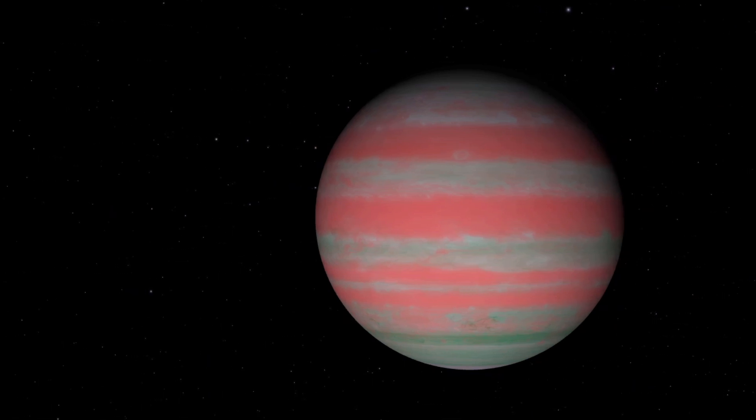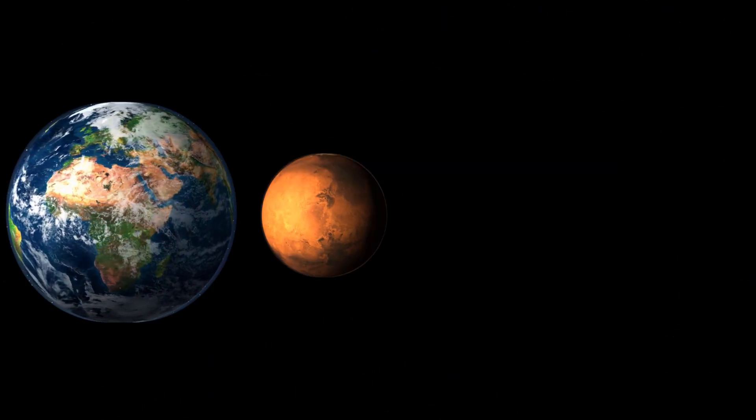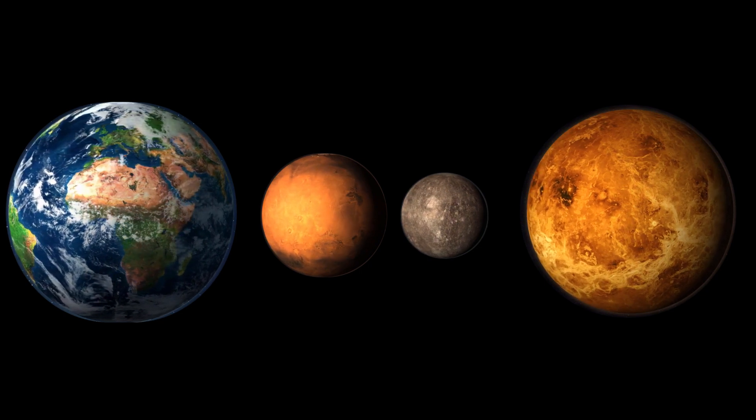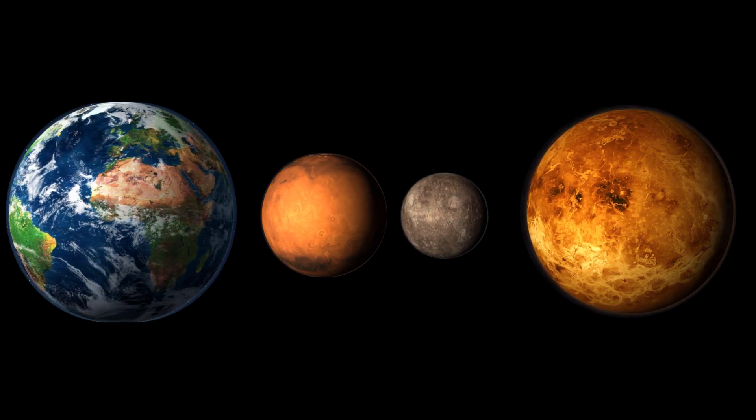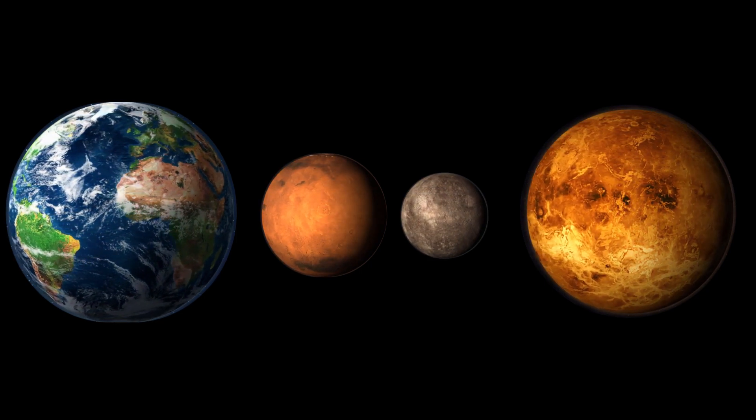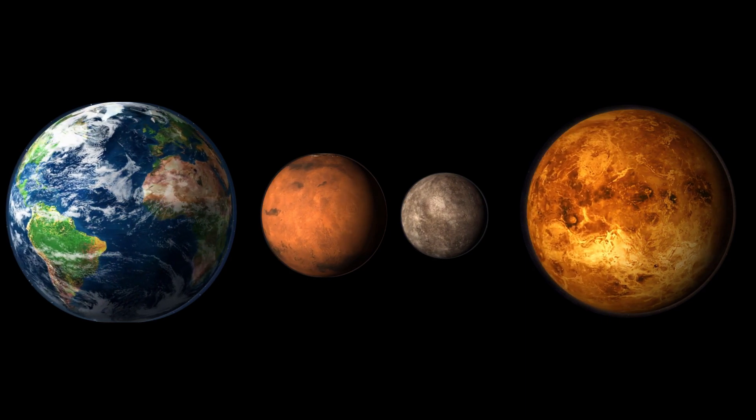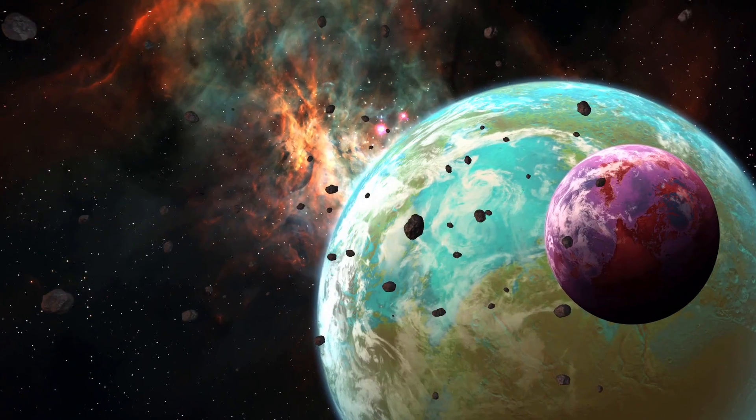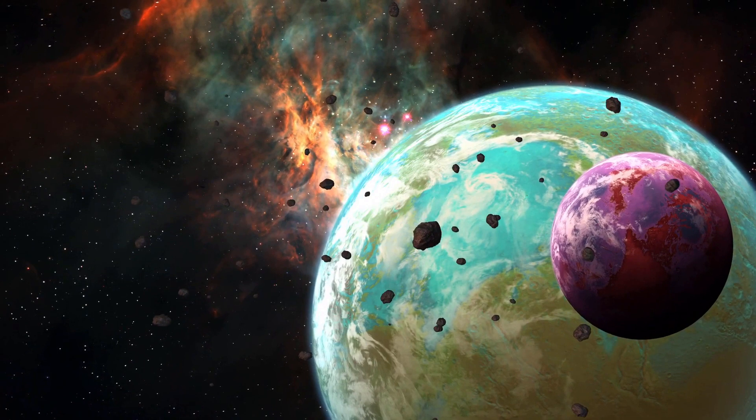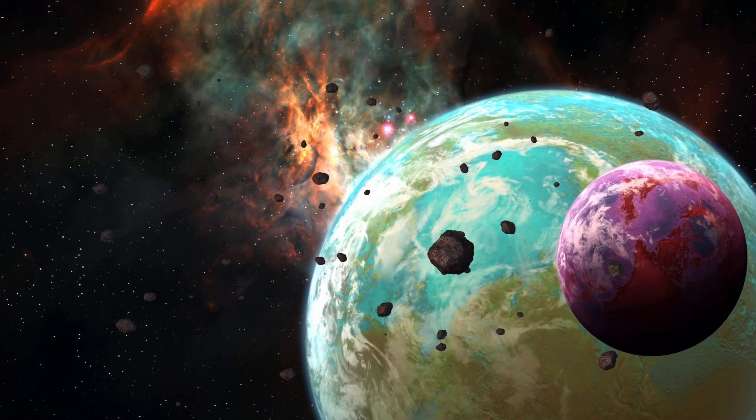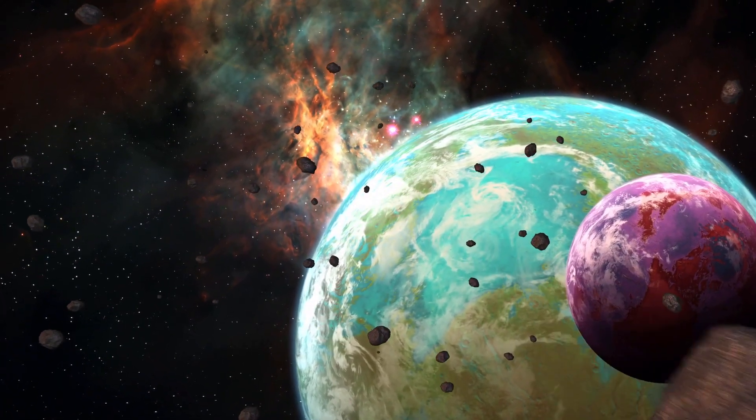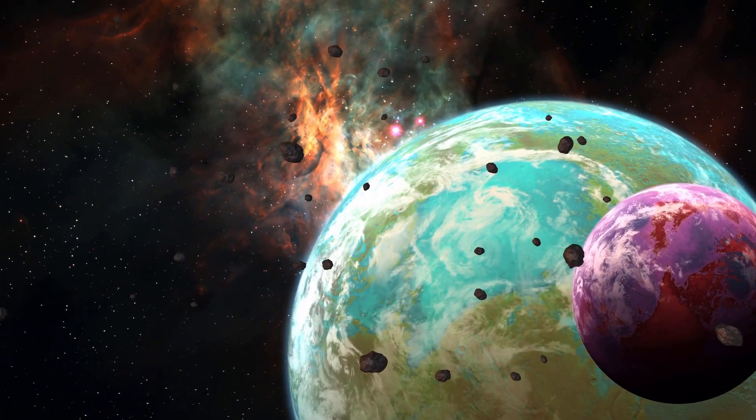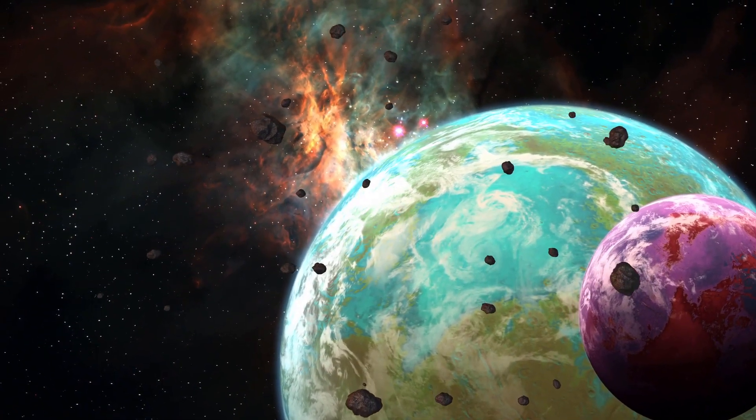4% are small rocky planets like Earth, Mars, Mercury, and Venus. This percentage may increase as we get better at detecting smaller planets. And finally, 31% are super-Earths, sometimes referred to as mini-Neptunes. Some of these planets may be rocky worlds, water worlds, or Earth-like planets that are covered in a thick, gaseous atmosphere, which we'll explore momentarily.